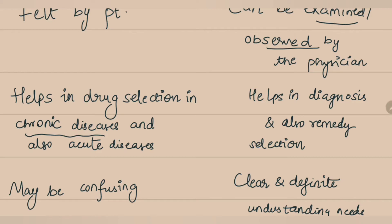Objective symptoms help in both diagnosis and remedy selection. The word diagnosis is important because to understand the current presentation of what a person is suffering with, we need examinations. For example, if a person comes with fever and examination of the pulse shows bradycardia — a pulse rate less than 40 — you can identify a shock-like situation. By examining blood pressure and finding hypotension, you know the person needs fluids immediately. Examination is really important for diagnosis, and what helps in diagnosing the case is what we call an objective symptom.